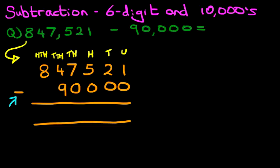Now, this is quite easy, so let's do this relatively quickly. The units column, one minus zero is one, tens, two minus zero is two, hundreds, five minus zero is five, and thousands, seven minus zero is seven.